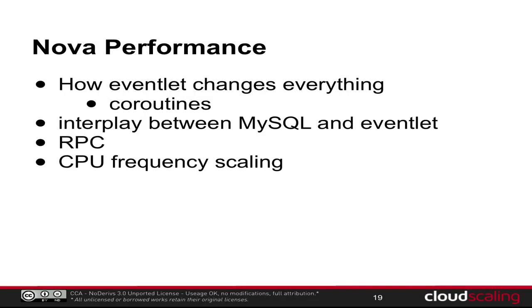CPU frequency scaling will lower the speed of a CPU when it's not in use, saving power. But because of the strange load properties of Nova Compute, it doesn't work well. When we turned it off, we got a 2x speedup on the compute nodes, which we did not expect at all. That's also a trade-off: you're using all this extra power because you're always running at full CPU speed.